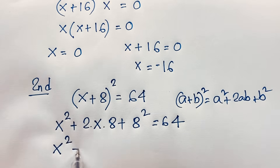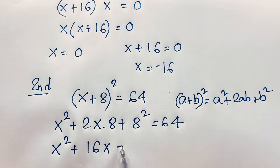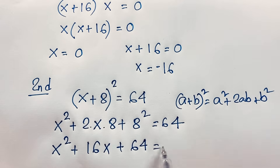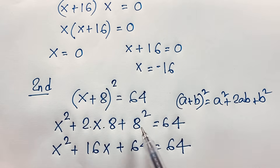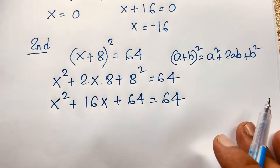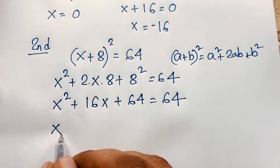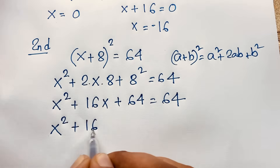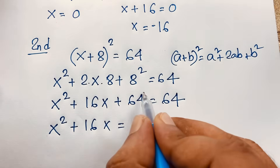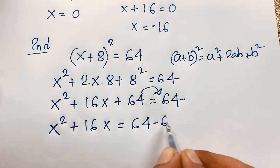So expanding, x² + 16x + 64 = 64. Since 8² = 64, we have x² + 16x + 64 = 64. I move the 64 to this side, making it negative 64.